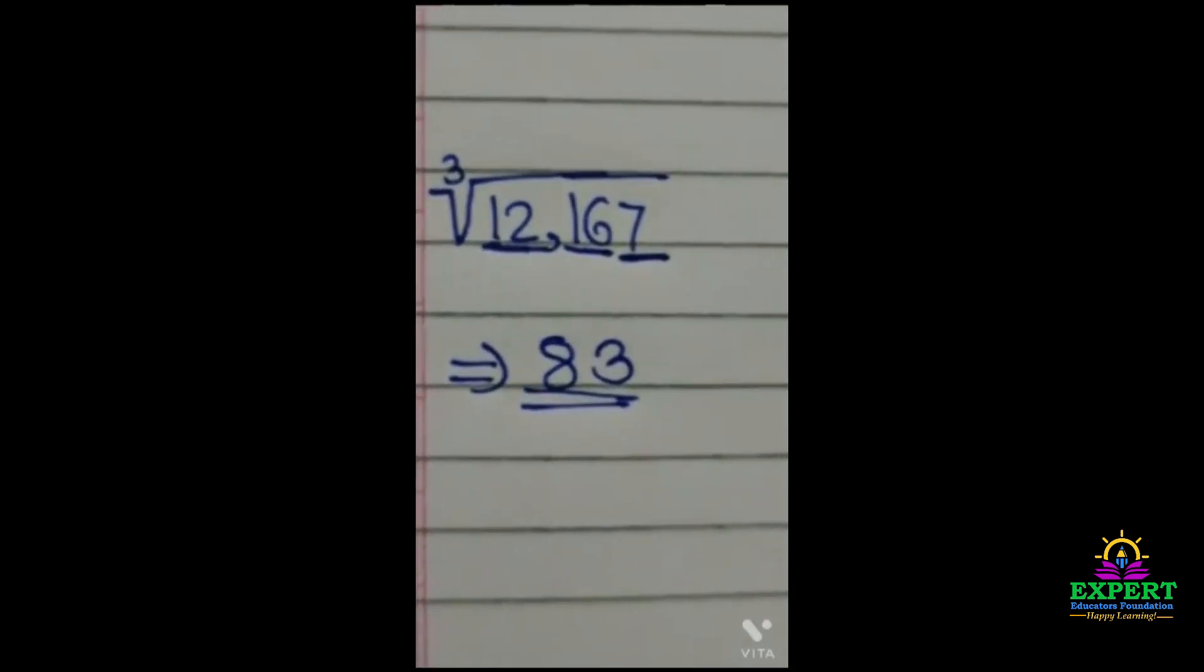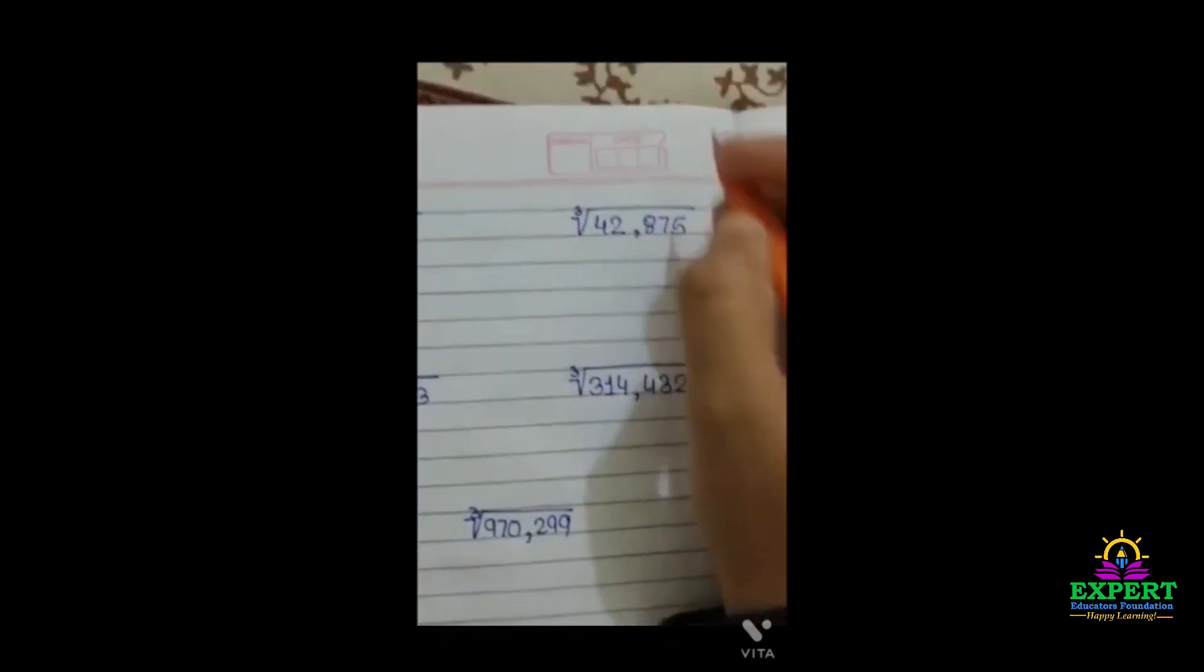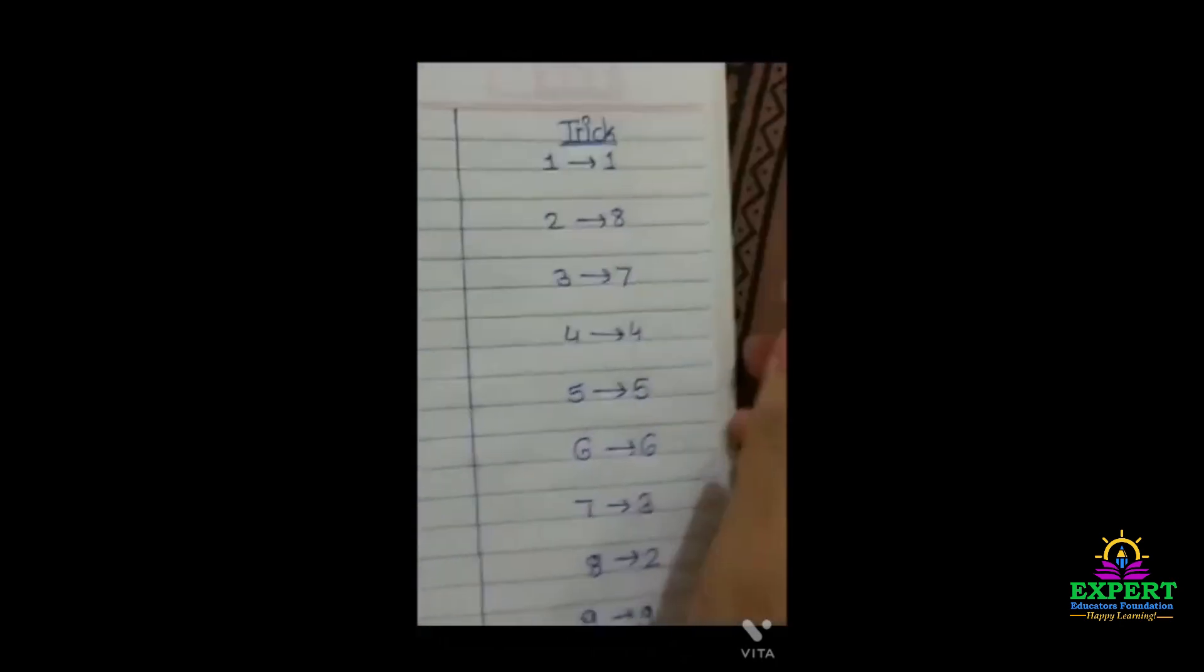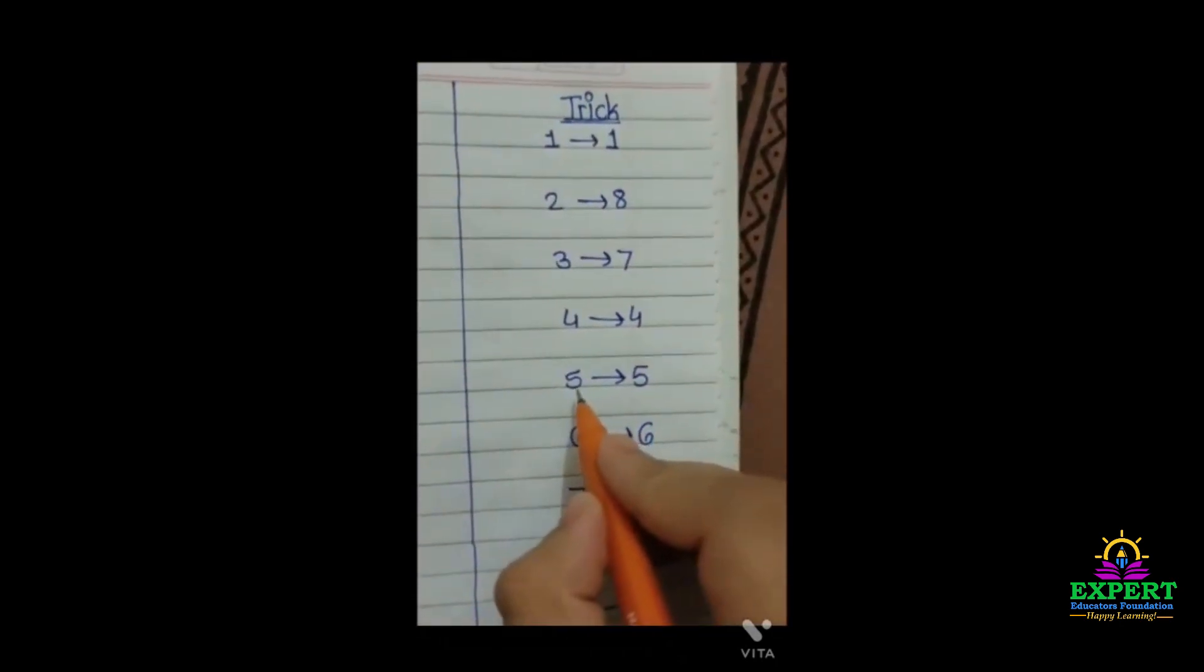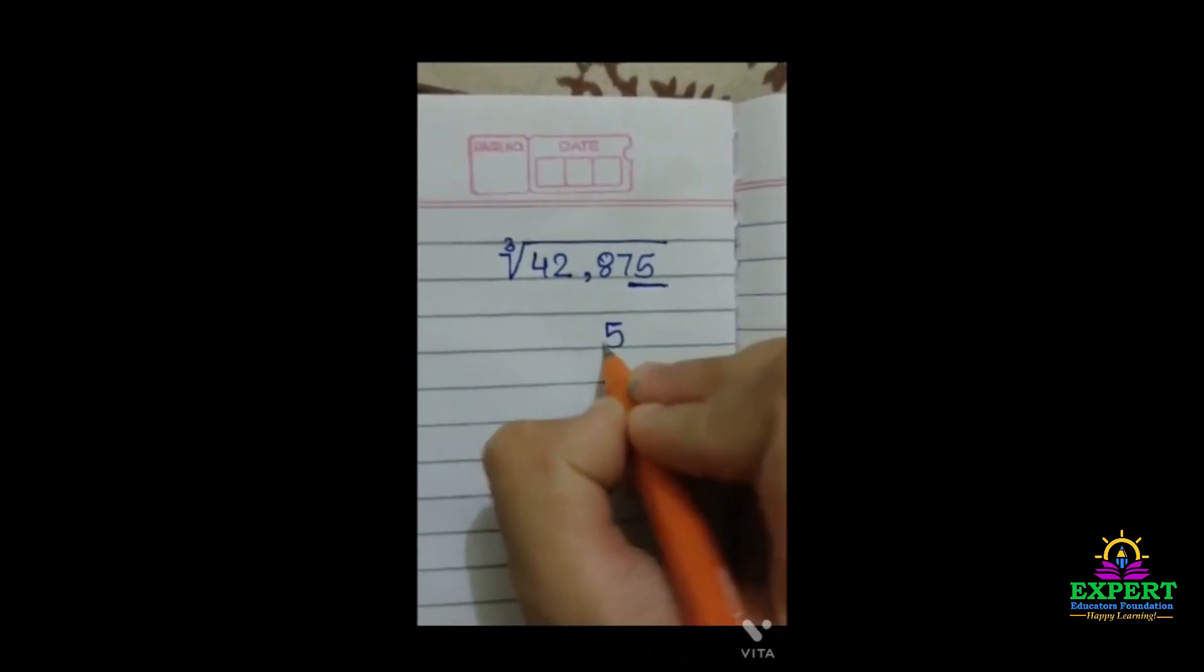Let's see more examples. See here I have taken the examples. Let's solve this. Now here the last digit is 5, and in the trick it is considered as 5 only. So we will write 5.